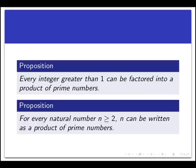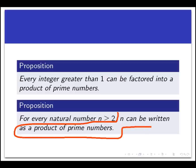If you rewrite the proposition slightly, it becomes clear. Rewrite it to say, for every natural number n greater than or equal to 2, n can be written as a product of prime numbers. That's the same thing as the original proposition, but just slightly rewritten, and it's easy to pick off the predicate here.